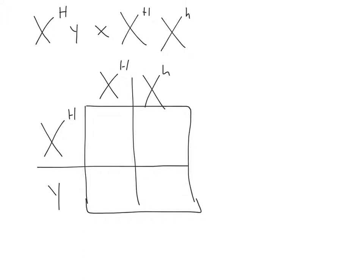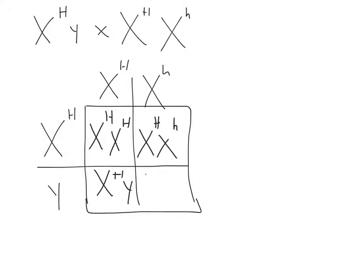Remember to keep track of your X and Y chromosomes when putting these gametes on the Punnett square, and when filling it in as well. Our boxes are: X^H X^H, X^H X^h, X^H Y, and X^h Y.